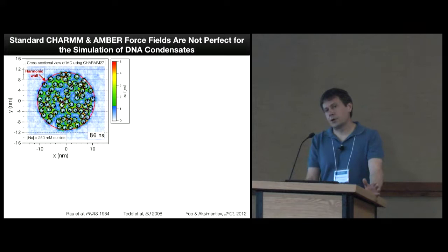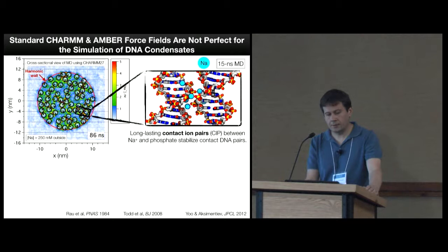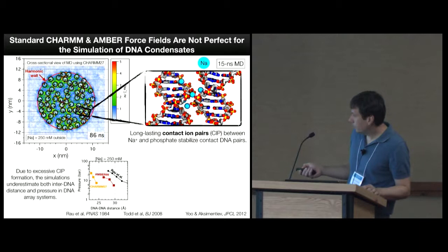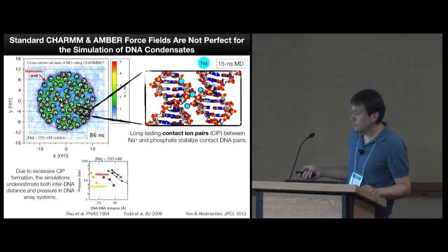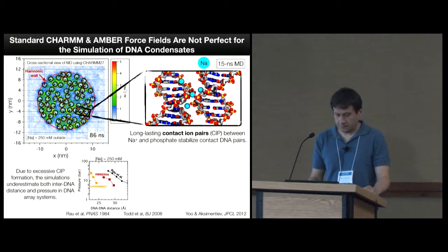Because we can measure pressure directly, we can plot pressure versus distance between DNA molecules. What we found was that we are actually nowhere near experiment. So here's an experimental study. This is the gold standard in the field, Rau-Parsegian. And this is where we are. Depending on what choice of force field, we can use Amber or we can use CHARMM. But either way, we are like orders of magnitude off.